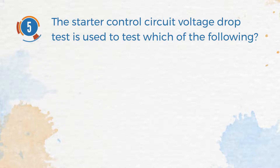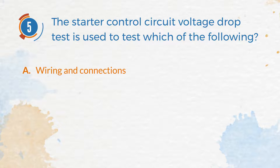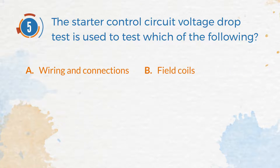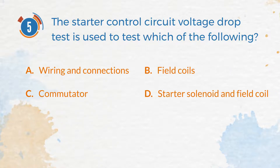Number 5. The starter control circuit voltage drop test is used to test which of the following? A. Wiring and connections. B. Field coils. C. Commutator. D. Starter solenoid and field coil.